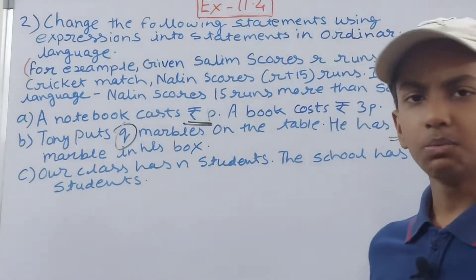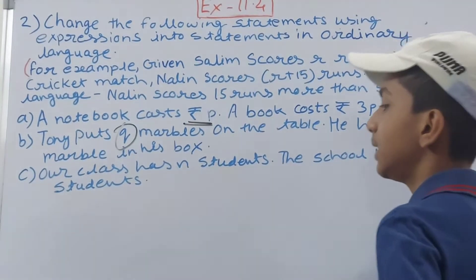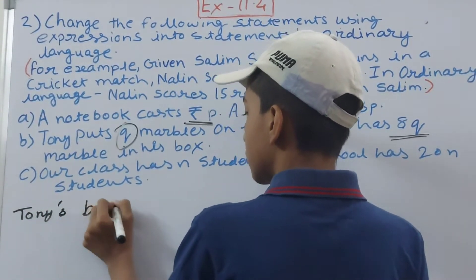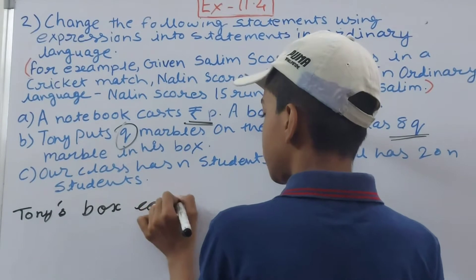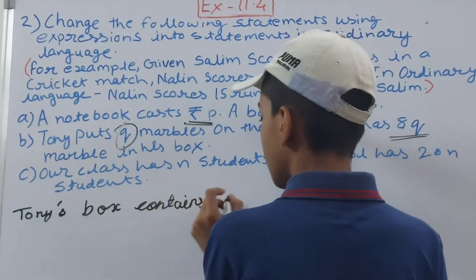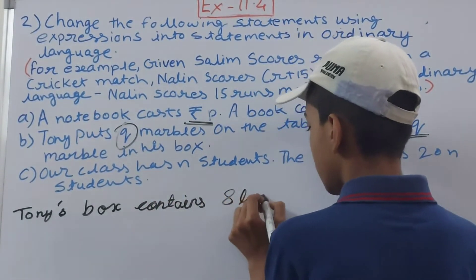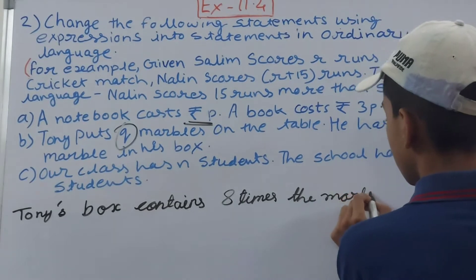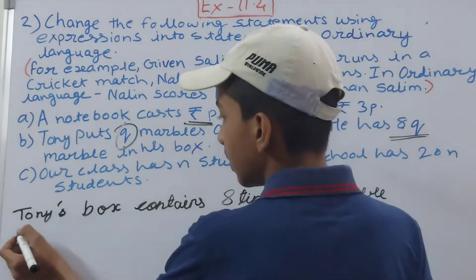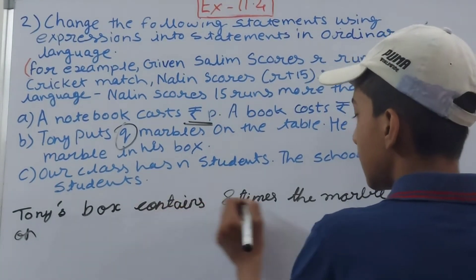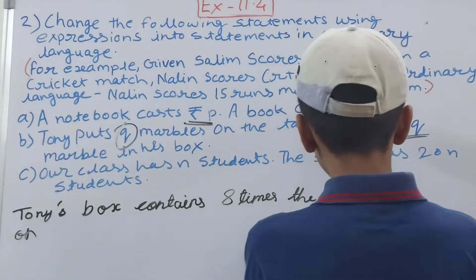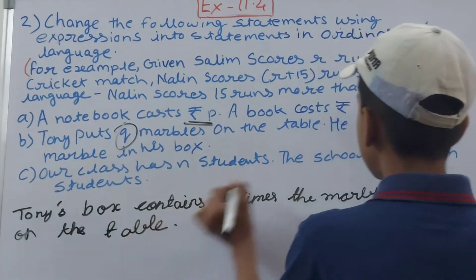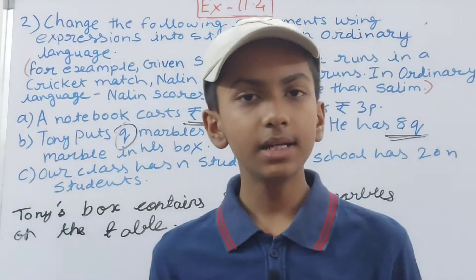In simple words we can write: Tony's box contains eight times the marbles on the table. Eight times, because you can see 8q — multiplied by 8 — so eight times more.